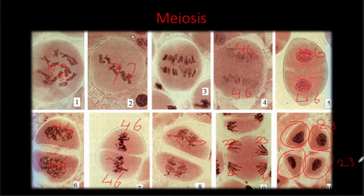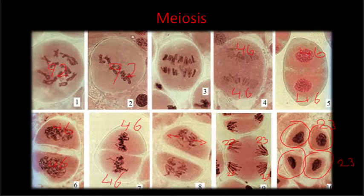Within the process of meiosis, you do go through a duplication phase where you go from 46 to 92 chromosomes. Then you separate those chromosomes back to 46 when you go from one cell to two cells. But then those two cells divide again to make four cells that have half the number of chromosomes. So why does meiosis do this — why would meiosis halve the number of chromosomes?